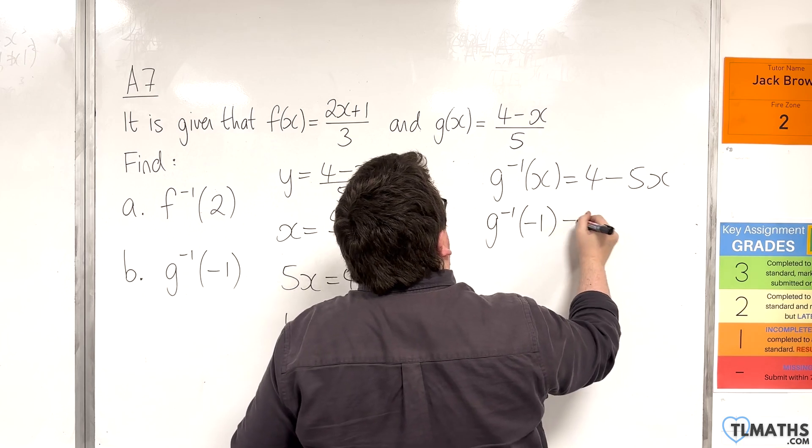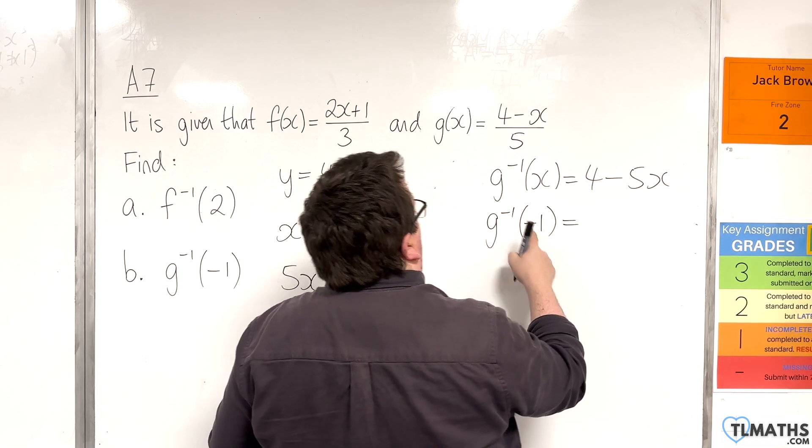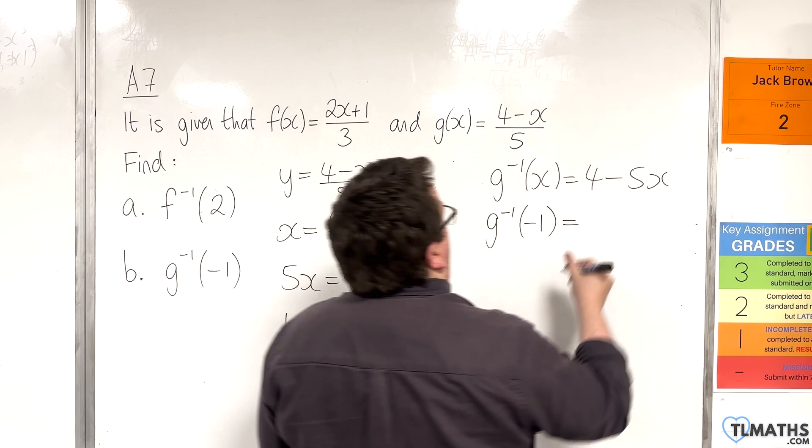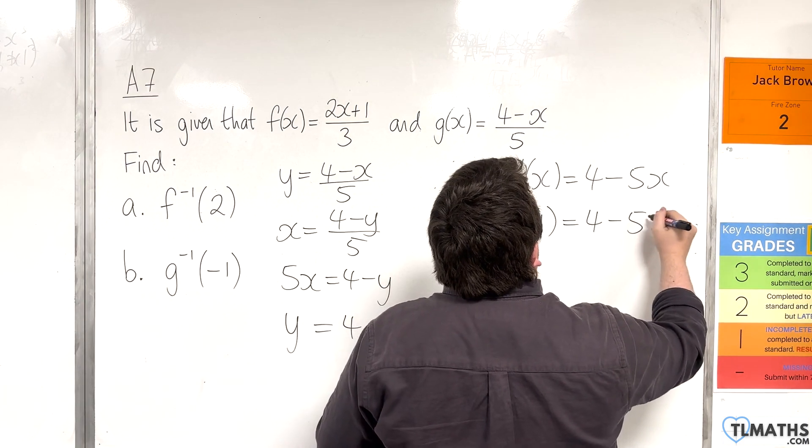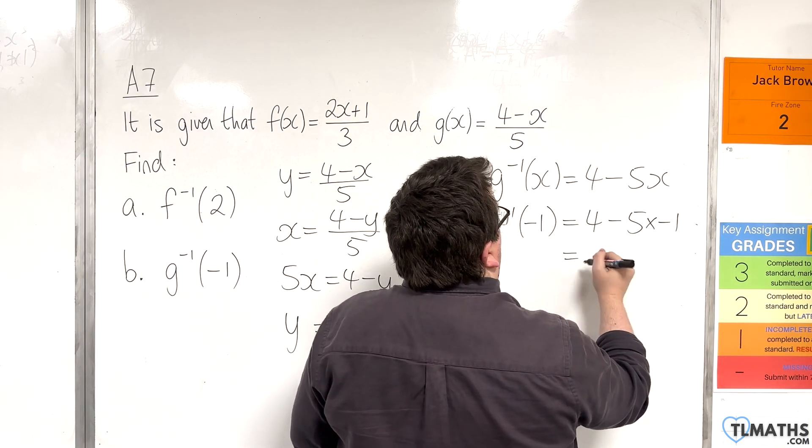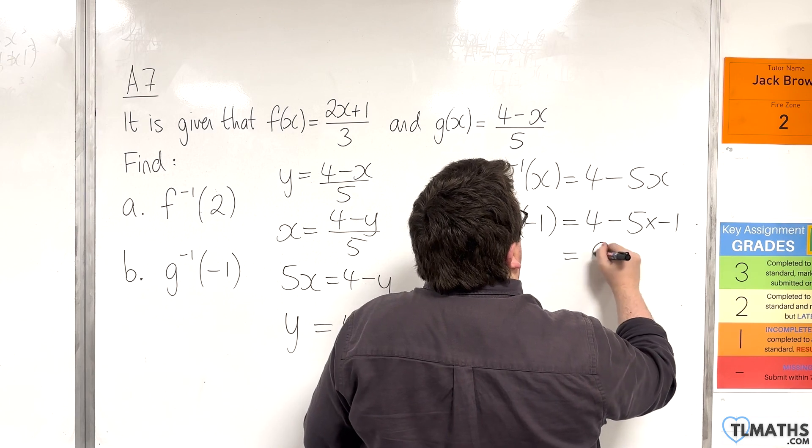So, if I want to find the inverse function of g at minus 1, that's 4 take away 5 lots of minus 1. So, that's 4 plus 5, which is 9.